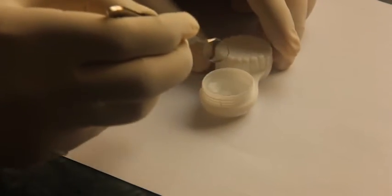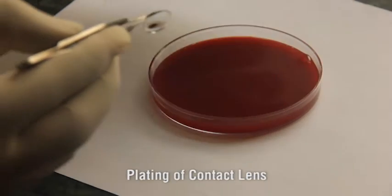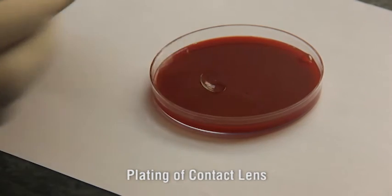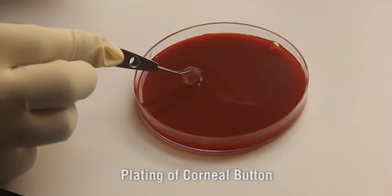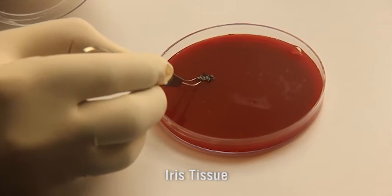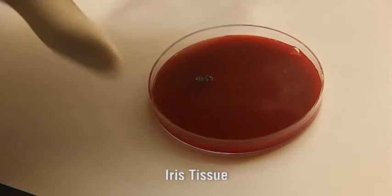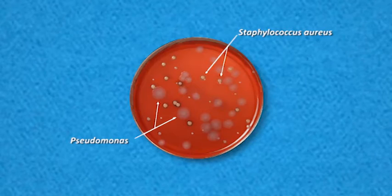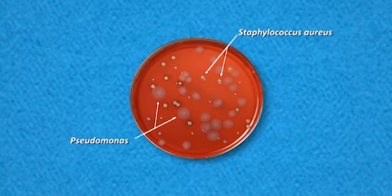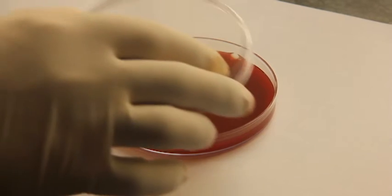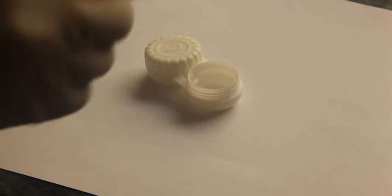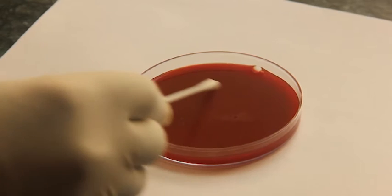Smears are generally not made from samples such as contact lens, contact lens solutions, intraocular lenses, corneal biopsies or buttons, and iris tissue. They are directly plated on the culture plates. The advantage of direct plating is that it provides abundant material in the culture media, increasing the chances of a positive culture. Contact lens solution is dropped from the bottle into the media and spread on the agar plate using a sterile swab.